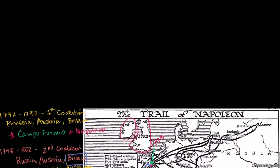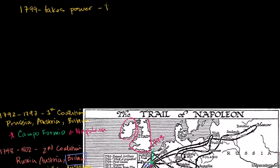Let's review what Napoleon was up to going into the War of the Third Coalition, which really does establish Napoleon as the dominant figure in Europe. In 1799, he takes power — first with two other councils, but then he declares himself First Consul.